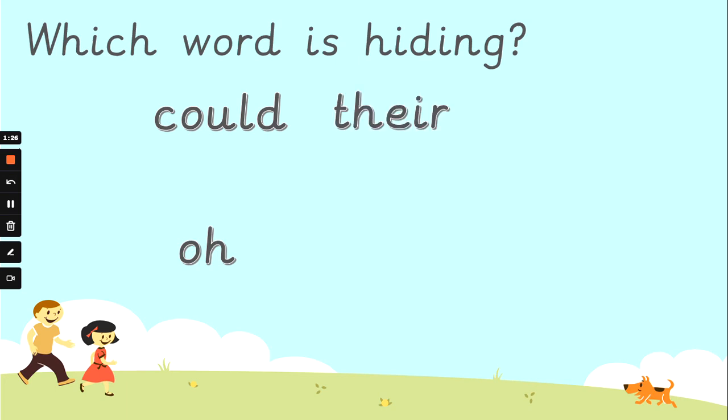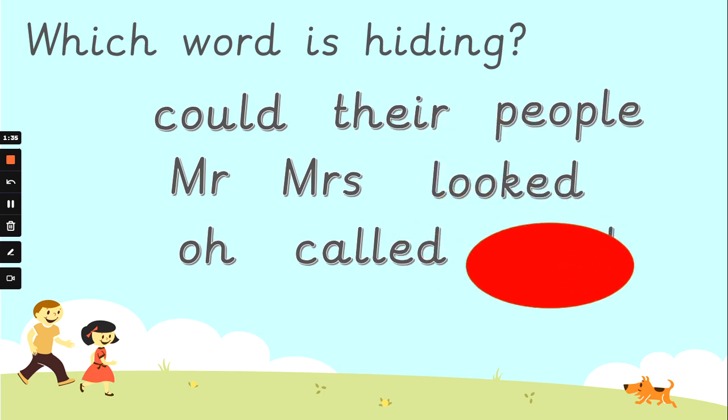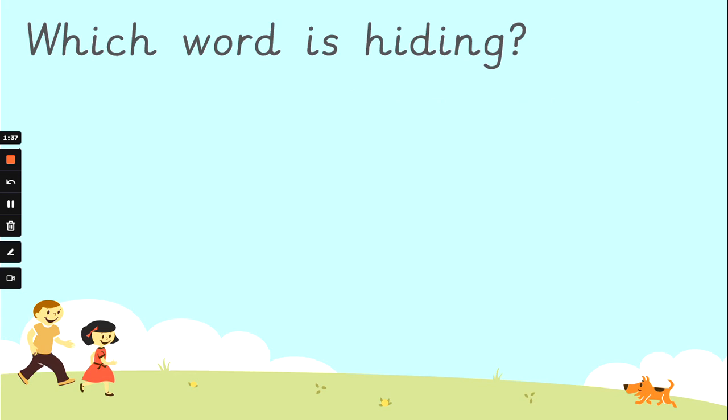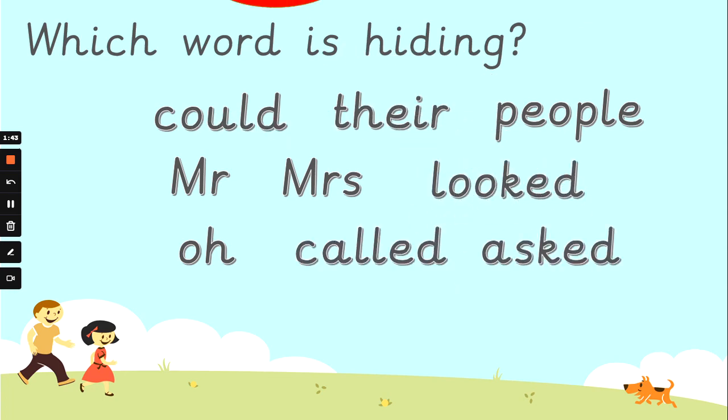Here we go again. So we've got could, their, people, Mr, Mrs, looked, oh, called and asked. Which word is hiding? That's it. It was asked. Well done. Here they come again. Make sure you can read them as they appear on the screen. Which word is hiding now? There you go. It's their. Well done.